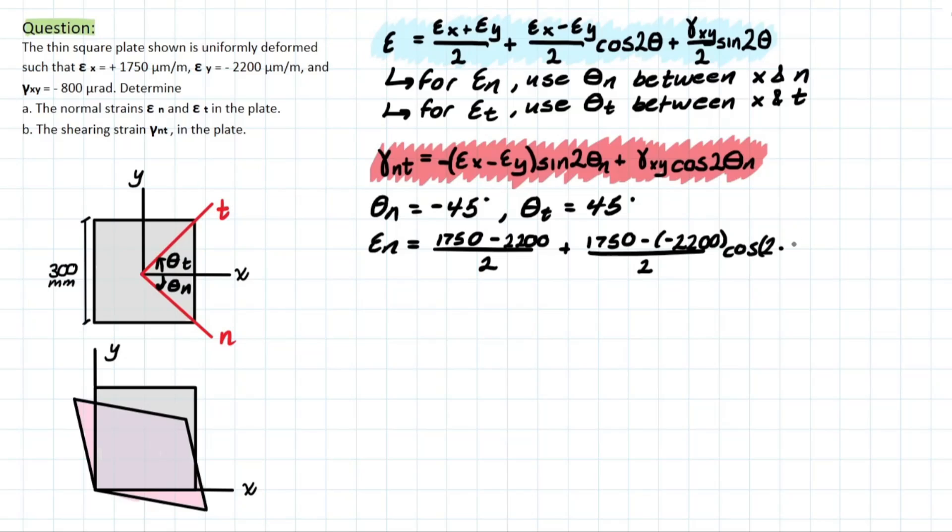And we also have the next part of the equation, which is the shearing strain, which is negative 800 over 2, sine 2 times negative 45. And solving that will leave you with a value of 175 micrometers per meter.